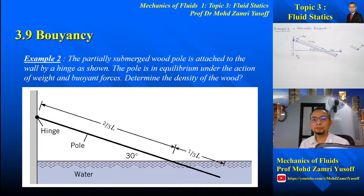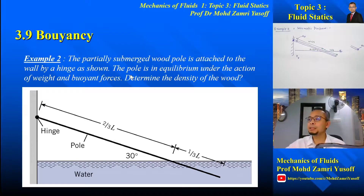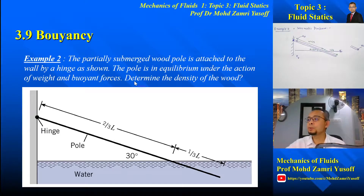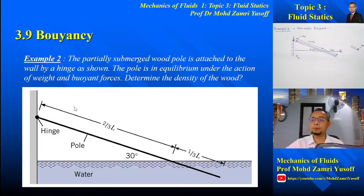Bismillahirrahmanirrahim. Now let's look at the second example for buoyancy. Here we have a partially submerged wood pole attached to the wall by a hinge as shown. The pole is in equilibrium under the actions of weight and buoyant force. We are asked to determine the density of the wood.